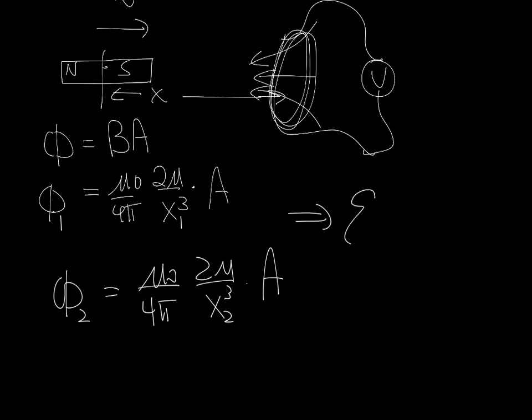And of course, the EMF is going to be the rate of change of the flux. So that's going to be phi 2 minus phi 1 divided by delta t, the time over which the flux changes. In other words, the time over which x changes from x1 to x2.